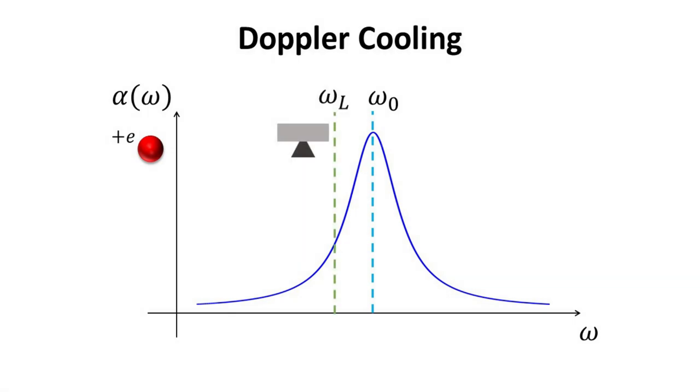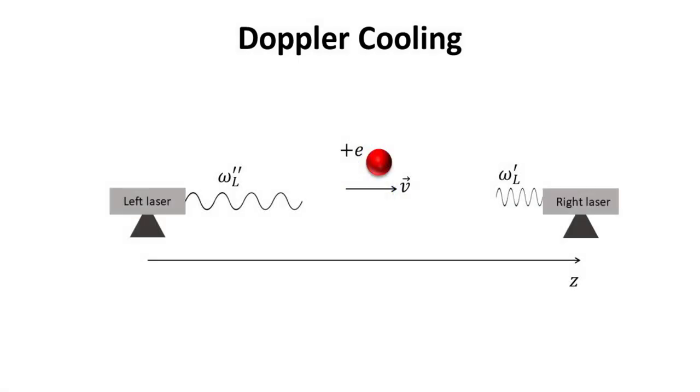Here, we choose the lasers to be slightly red detuned with respect to the ion. Thus, its light absorption is smaller than it would otherwise be if it's resonant. According to the Doppler effect, the frequency perceived by an object moving towards its light source is higher than when it is moving away from it.